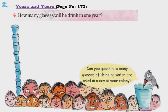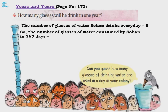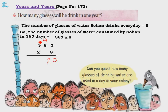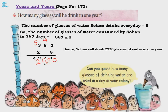How many glasses will he drink in 1 year? He drinks 8 glasses per day, and 1 year has 365 days. So 365 into 8: 8 fives are 40, write 0 carry 4; 8 sixes are 48 plus 4 is 52, write 2 carry 5; 8 threes are 24 plus 5 is 29. That gives 2,920 glasses of water in 1 year.